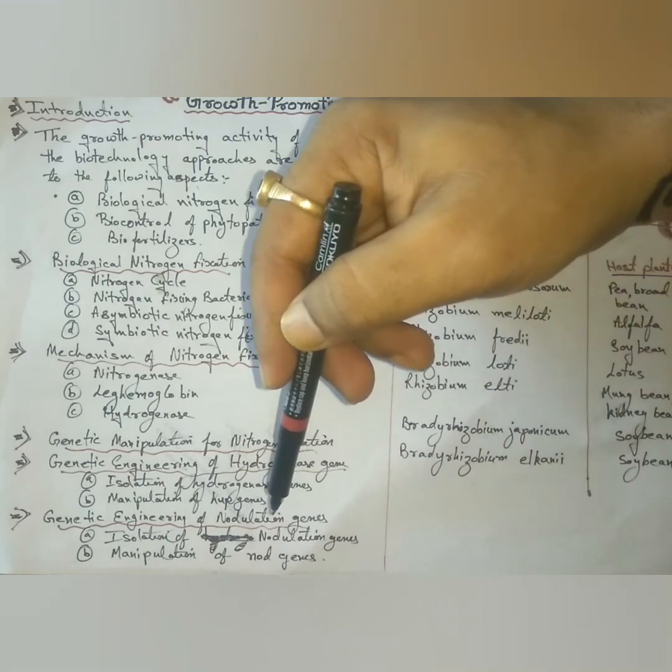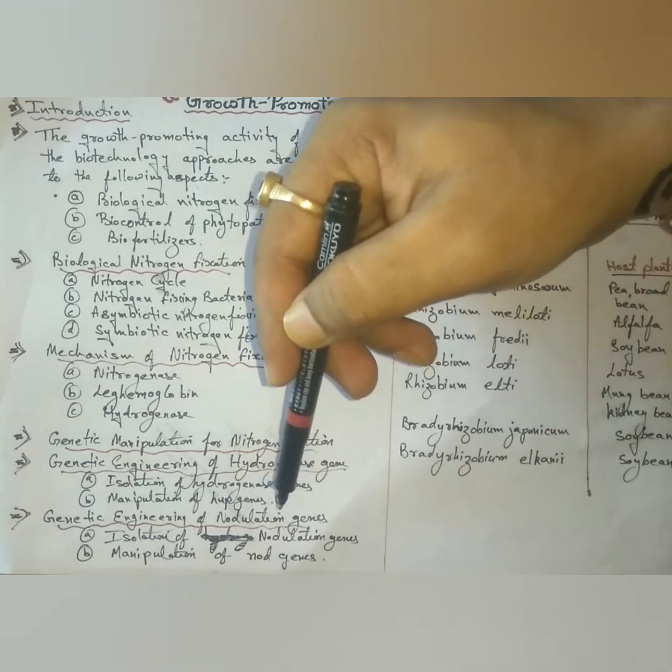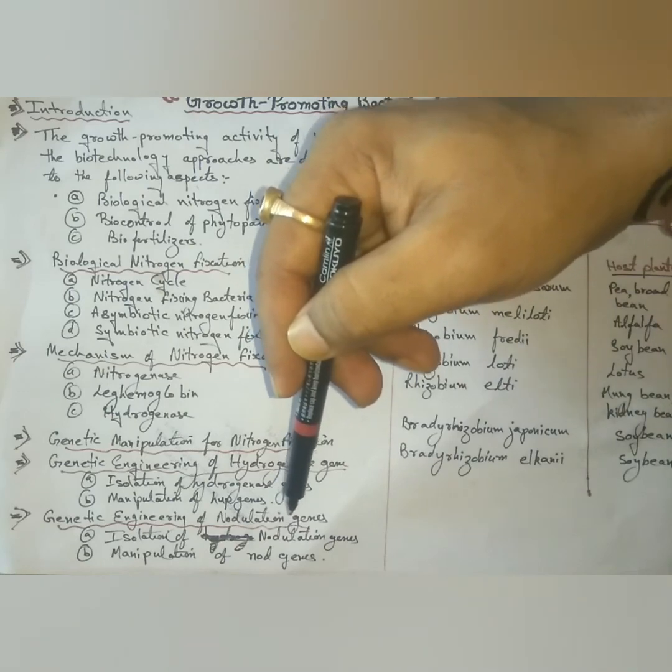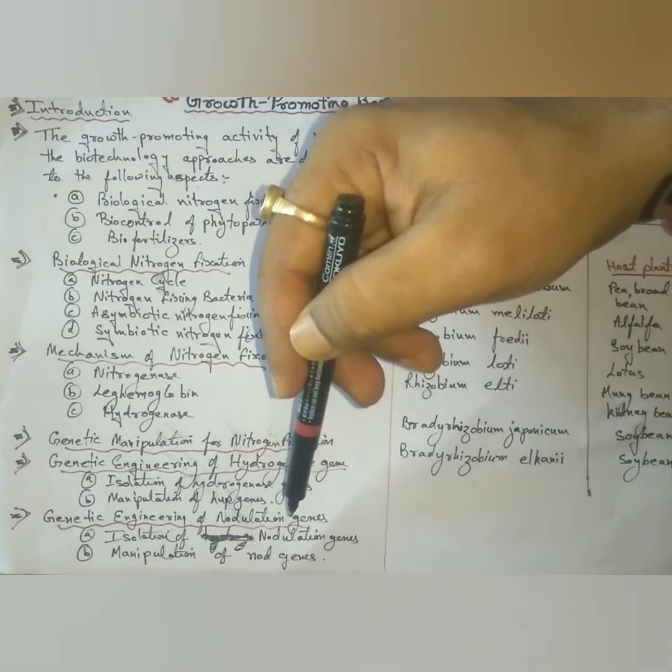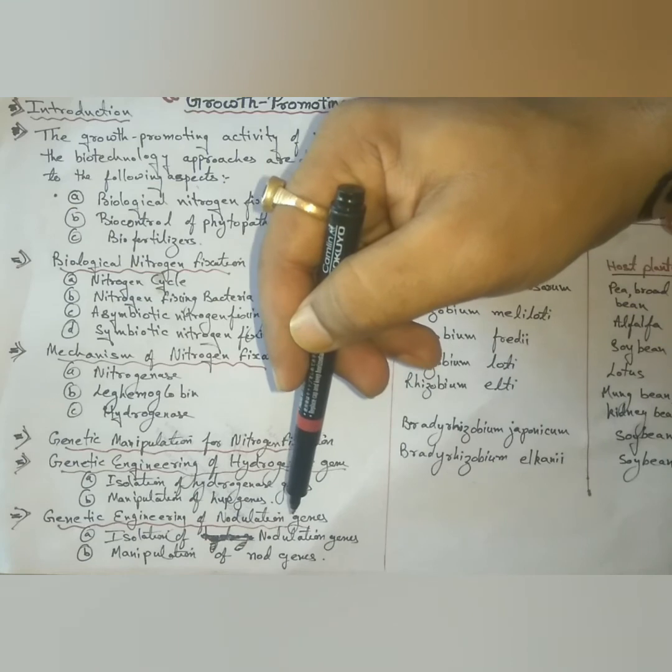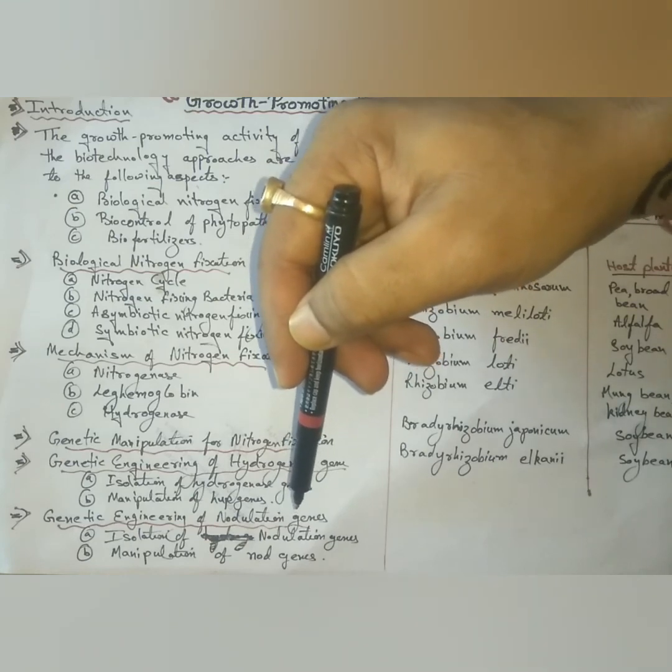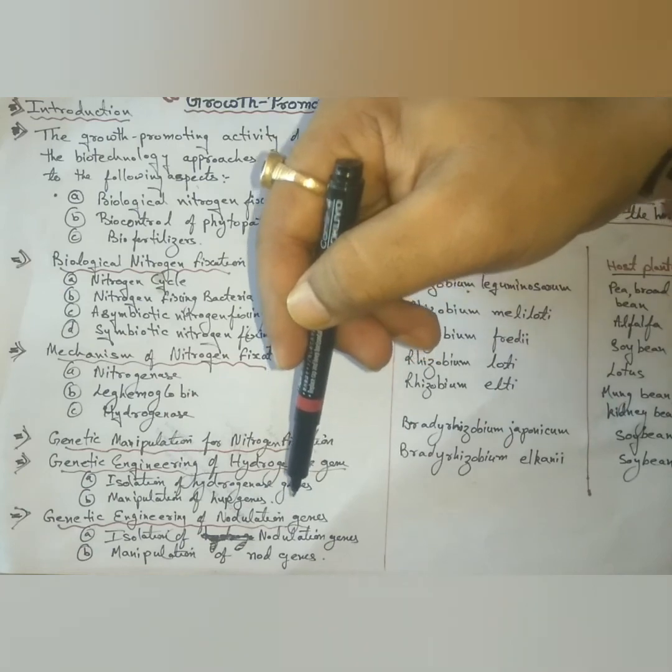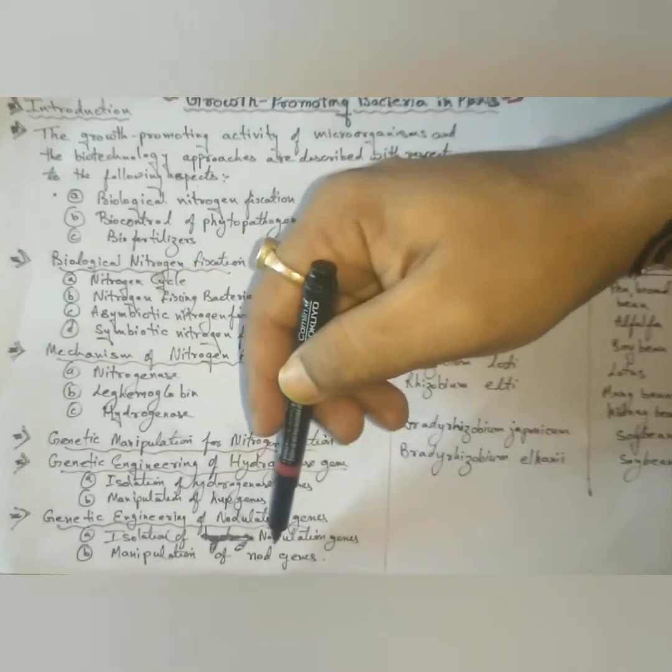The nod genes are broadly divided into three groups. First, common genes. Second, host-specific genes. And third, regulatory genes. The fixations of each one of the nod genes in nodulations have not been clearly identified. Further, many more new nod genes are being discovered every year. Next, manipulations of nod genes.